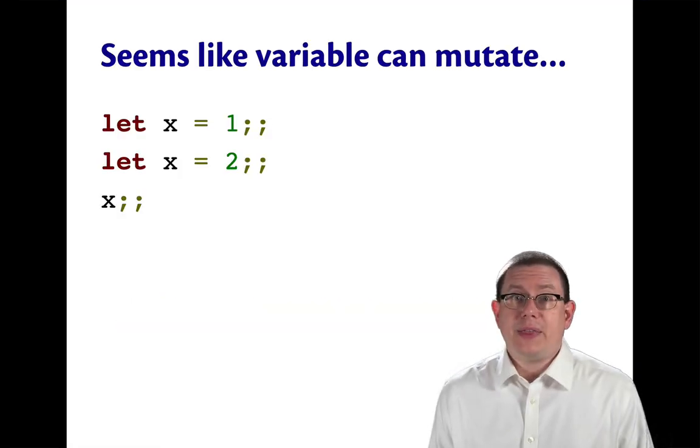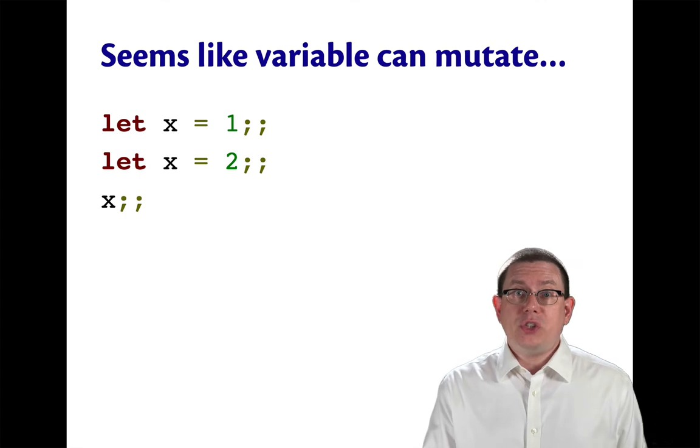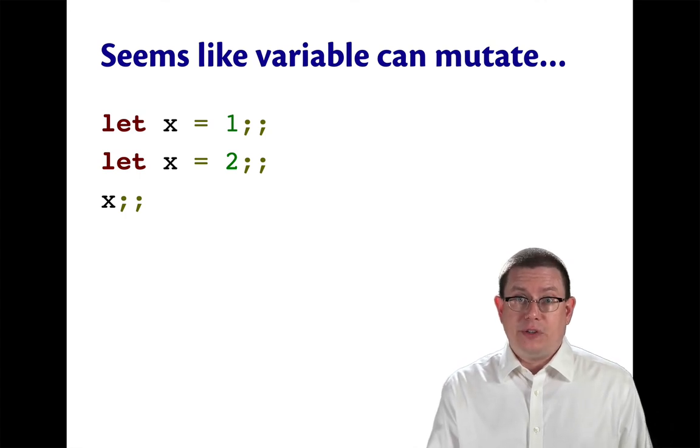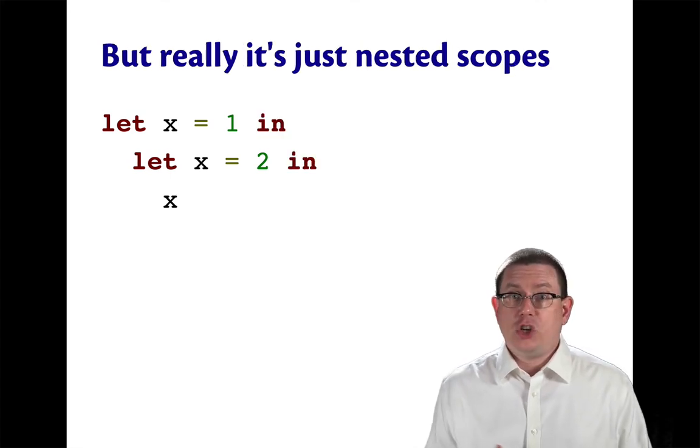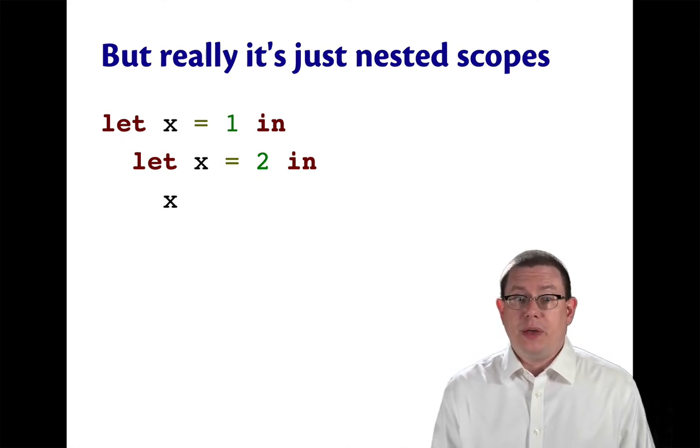It seems like that sequence of let definitions is mutating the variable x. But we now know that we can understand a series of definitions like that in the top level as just nested expressions, nested scopes, in other words.